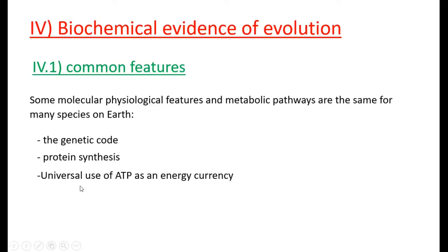Universal use of ATP as an energy currency. We saw that, for example, in plants during photosynthesis or during respiration, ATP is produced and then this ATP is used for other things. Many species use ATP as energy, so again this is an indicator that many species had a common ancestor, and this common ancestor most probably had these features.